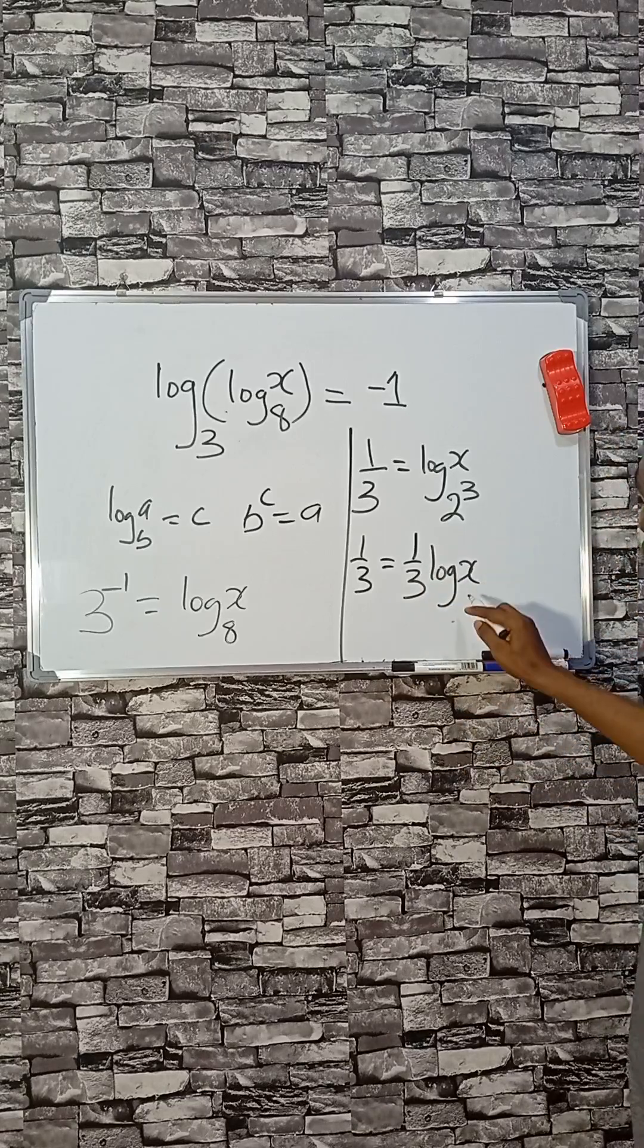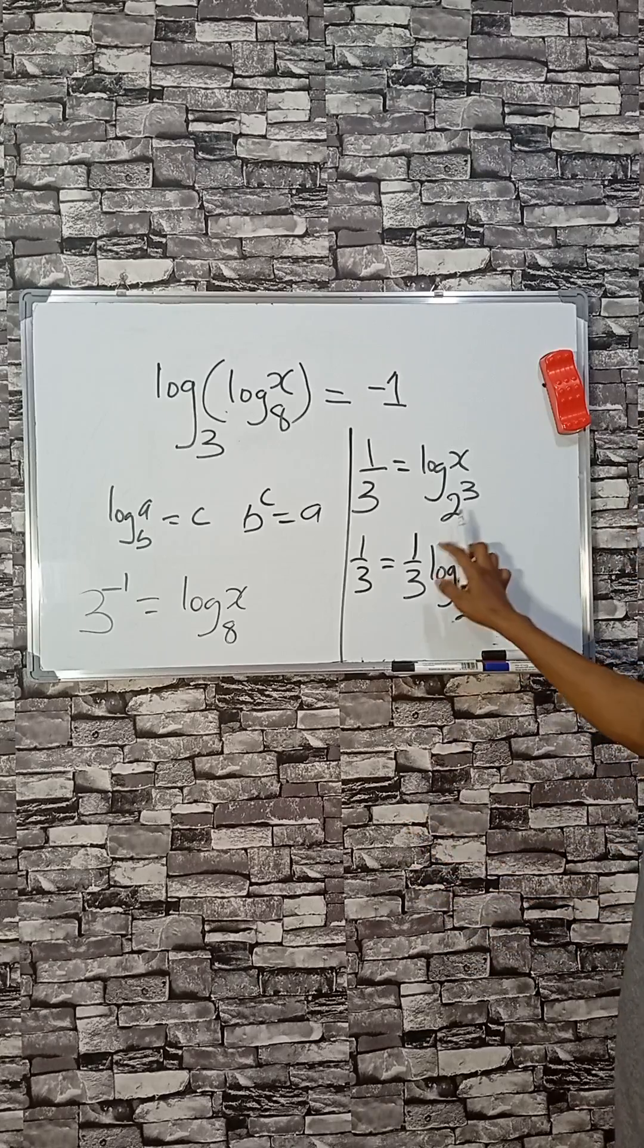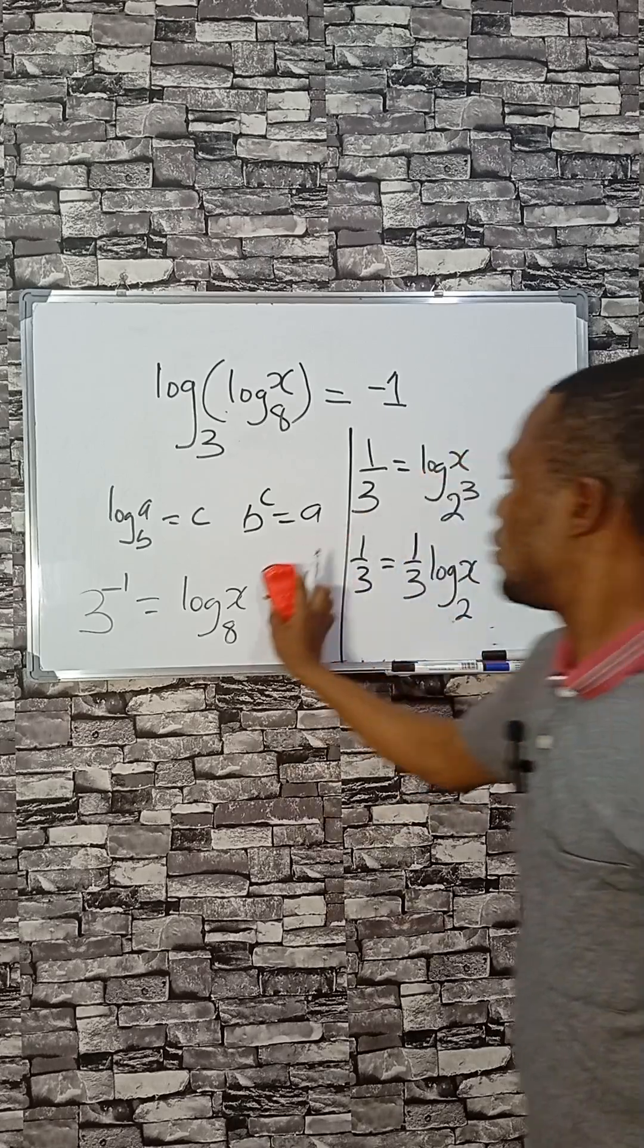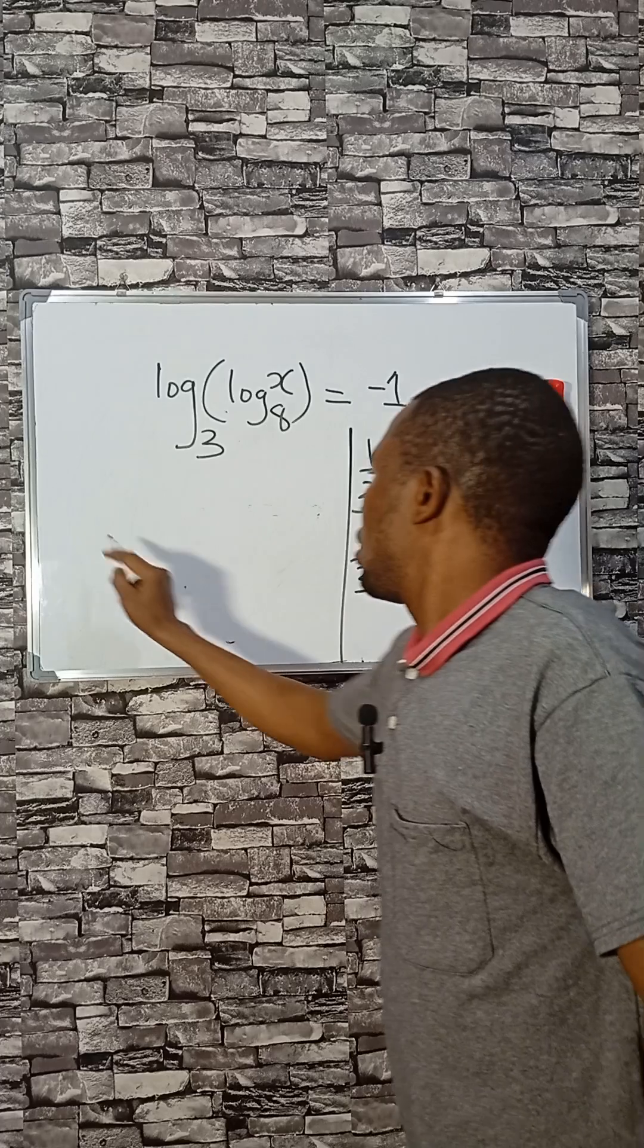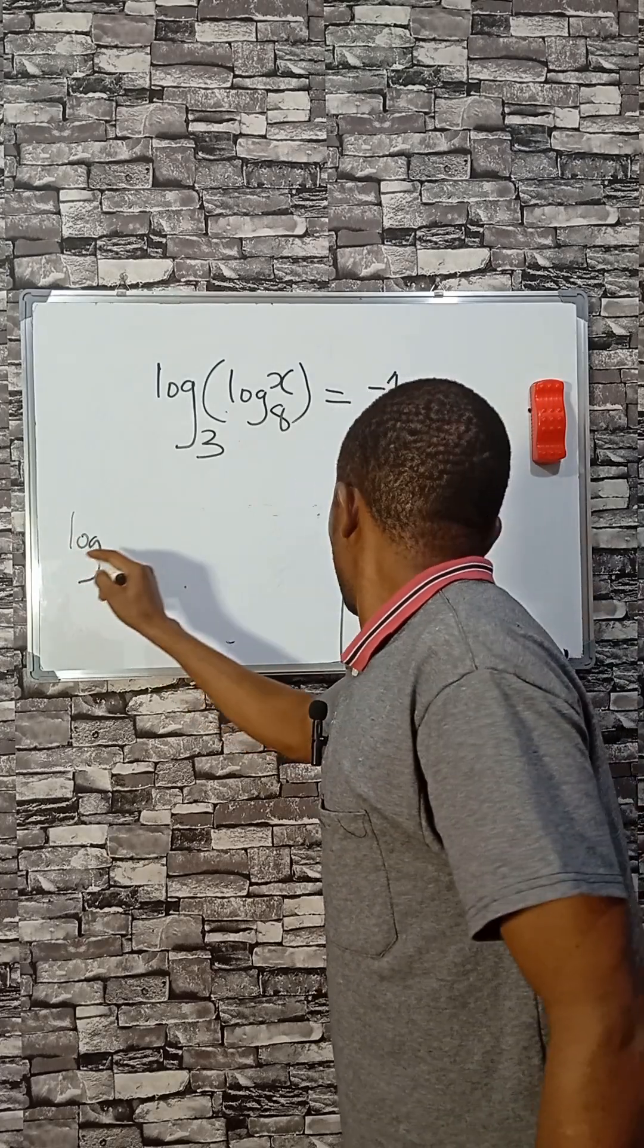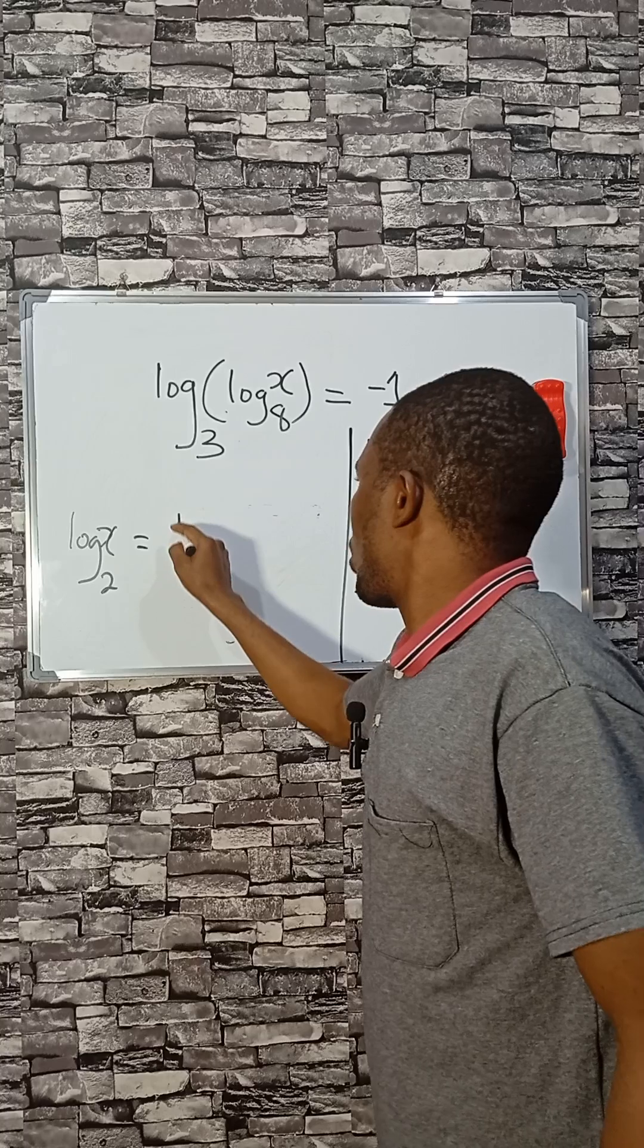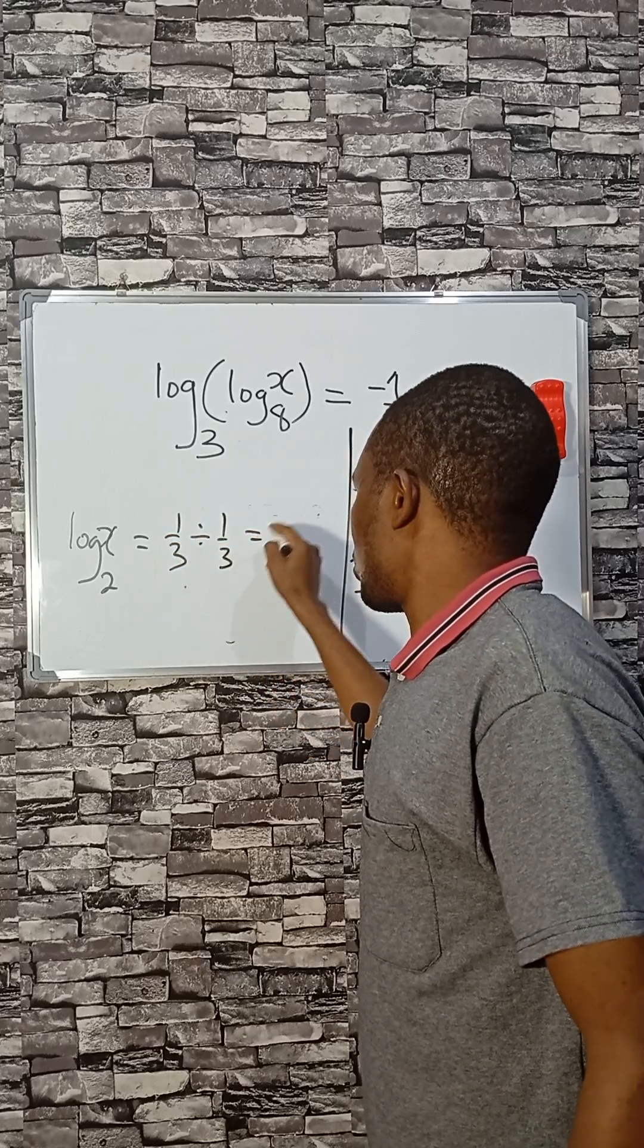Now we are looking for log X base 2. Making it the subject by dividing by 1 over 3. So if I divide by 1 over 3, log X base 2 is alone. That would be 1 over 3 divided by 1 over 3, which equals 1.